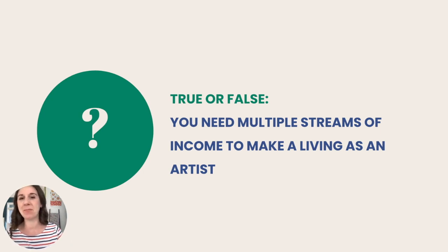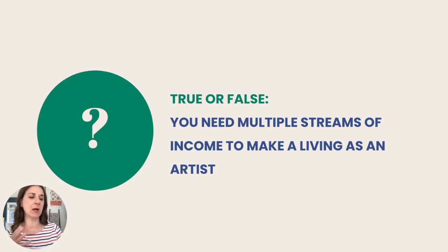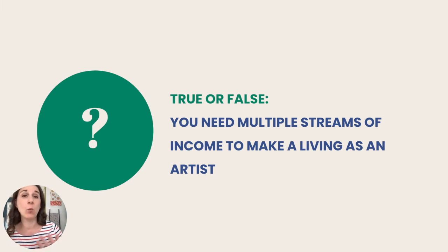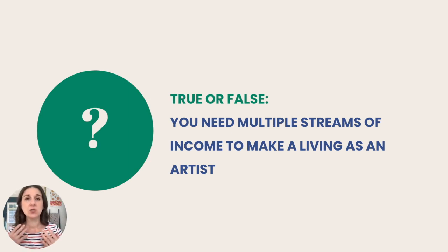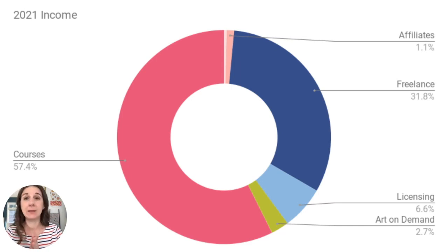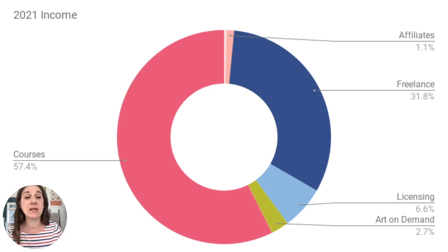I've already addressed this in past videos — how we see artists' pie charts at the end of the year with all the different streams of income they have. We hear webinars, podcasts, and all the blog advice about all the possibilities of things we could do with our art to make money. I have multiple streams of income: freelance design, licensing design, art on demand, courses, affiliates. This was my income last year.